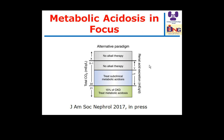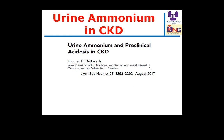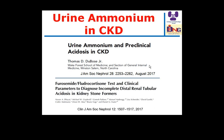By measuring urine ammonium, we can detect preclinical acidosis. There is also a study showing how to diagnose incomplete distal renal tubular acidosis by giving furosemide and fludrocortisone. This is the approach to diagnosing either preclinical or incomplete RTA.